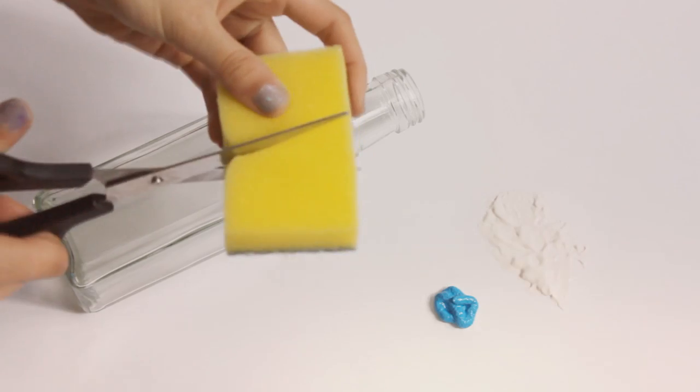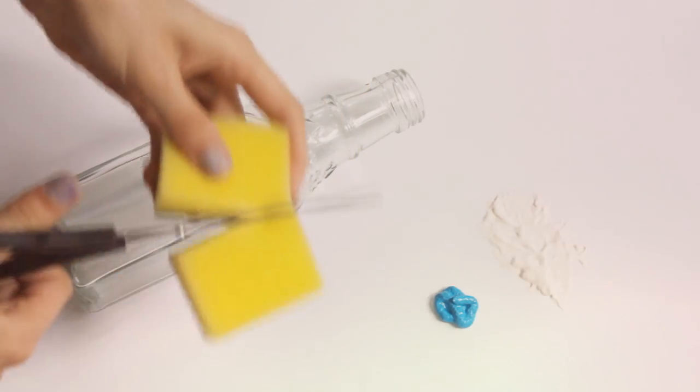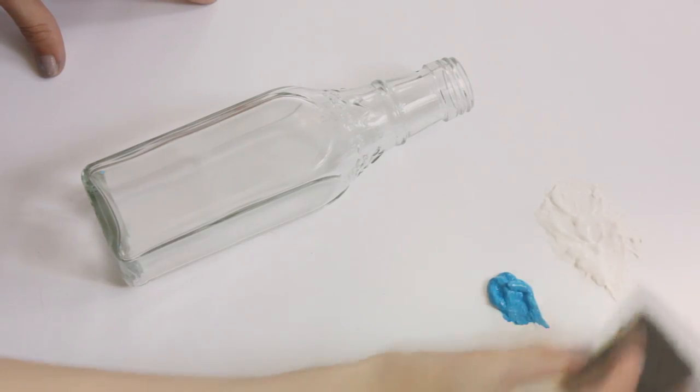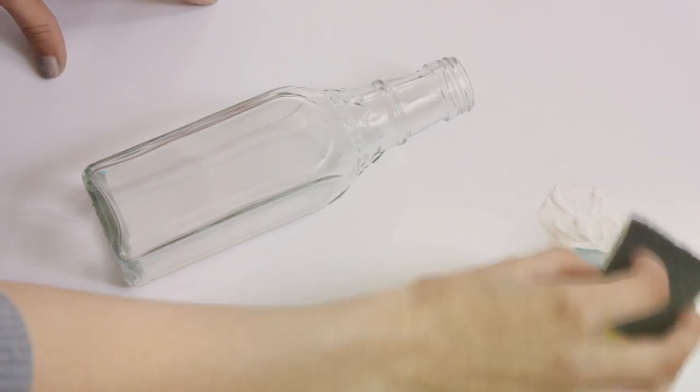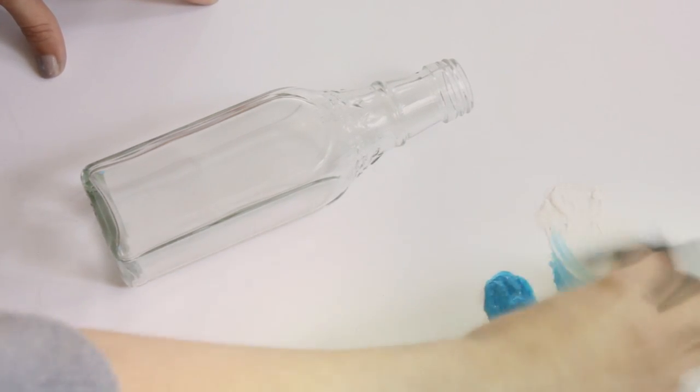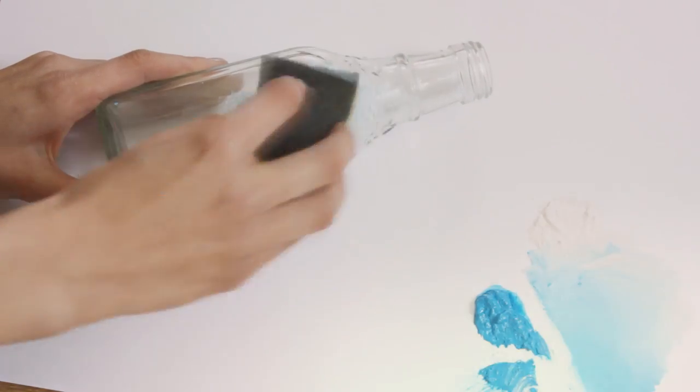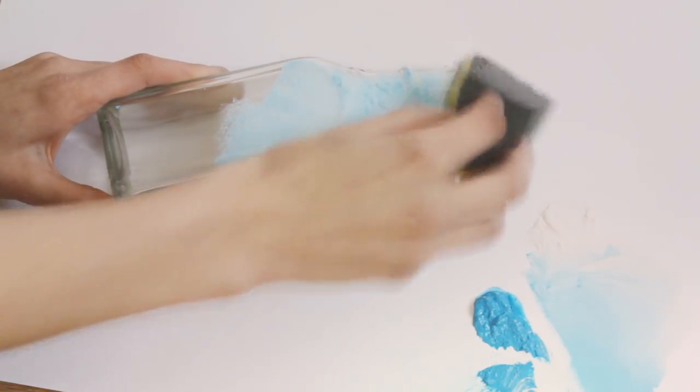paint on a piece of paper. And I'm also cutting the sponge in half just because it was a little bit too big. And then I'm just mixing the two shades together to get a very light blue color. Then I'm taking that blue color and I'm just stippling that on with my sponge onto the bottle.